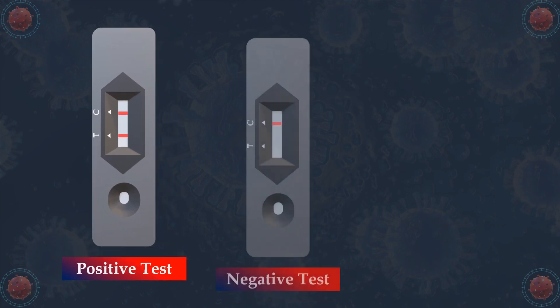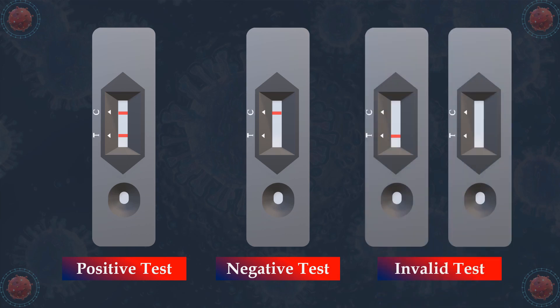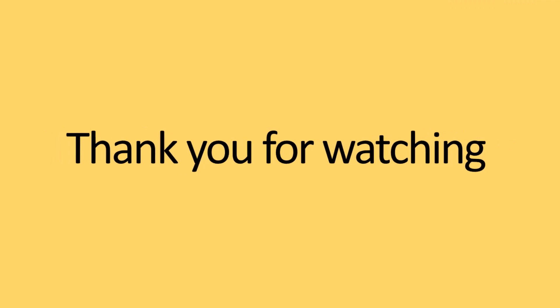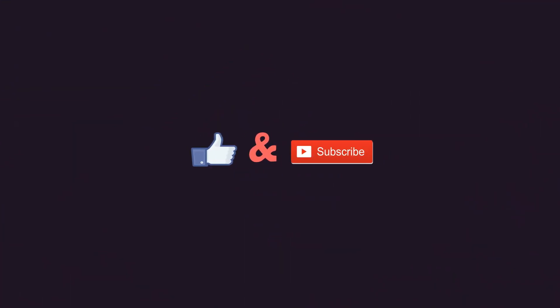The presence of one colored line in the control line region C indicates COVID-19 negative. No appearance of a colored line in the control region C indicates an invalid test.